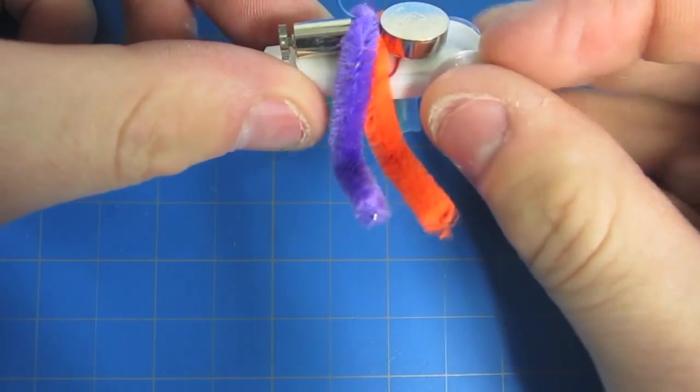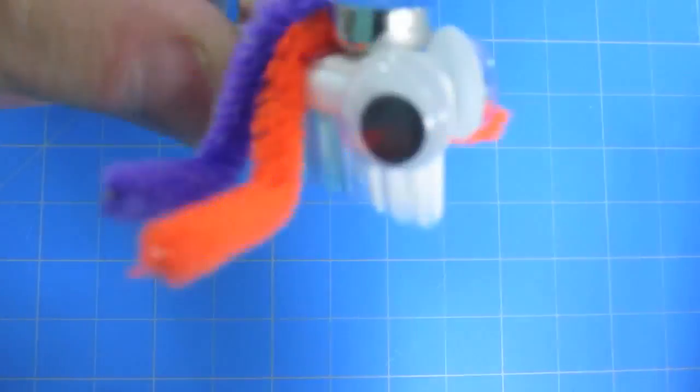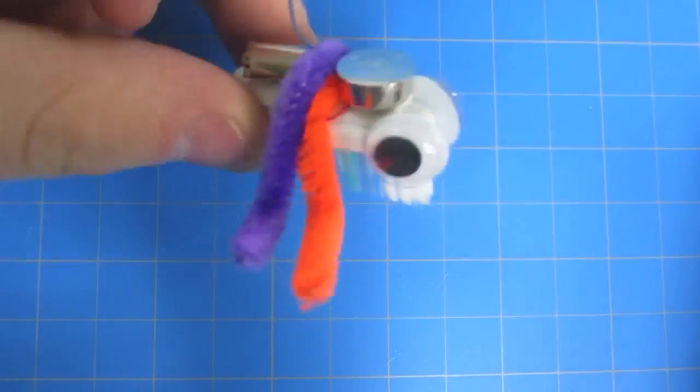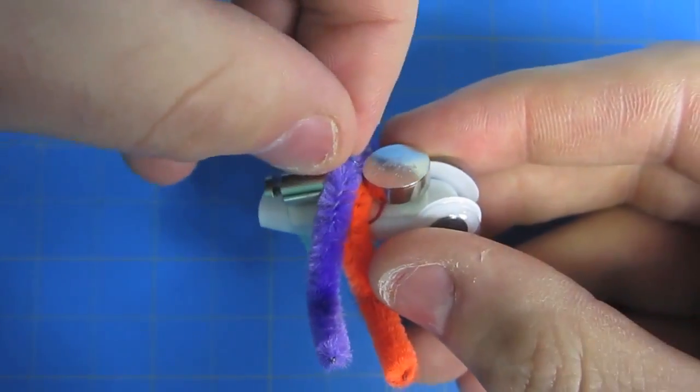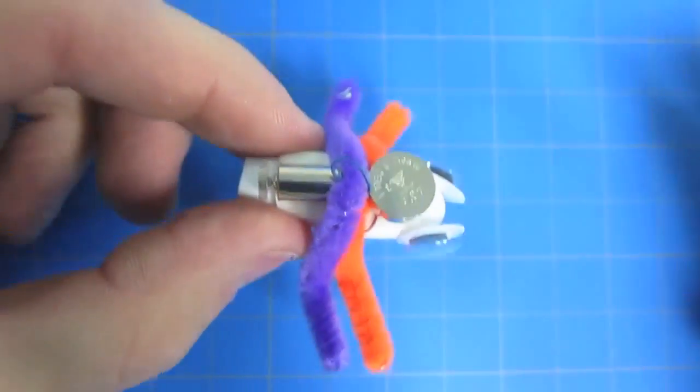Use the other wire lead to complete the circuit by touching the top or the side of the battery. The side works best as it will hold itself in place due to wire tension. After that, your bristlebot is good to go. Go!